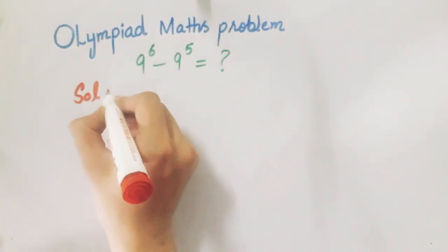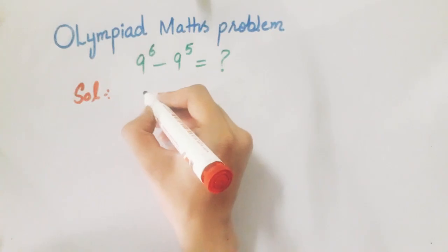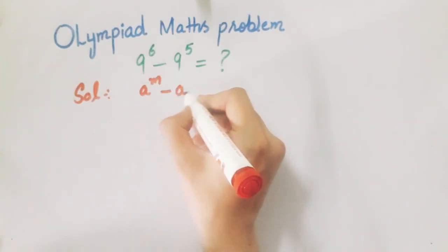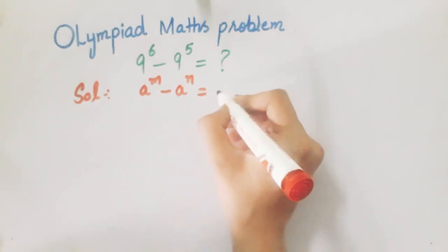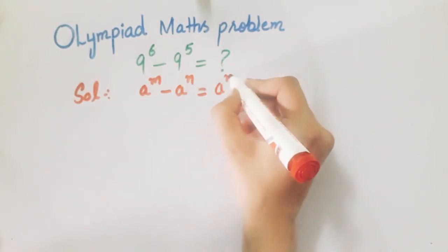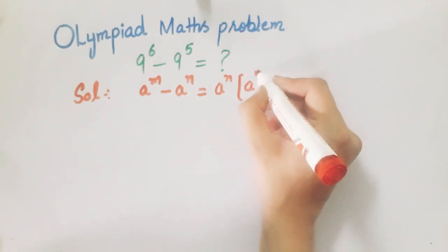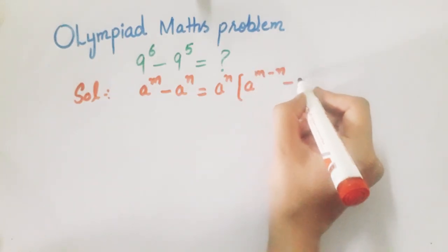This expression has a special pattern: a^m - a^n can be written as a^n taken as common (if n is smaller), and the remaining is a^(m-n-1).